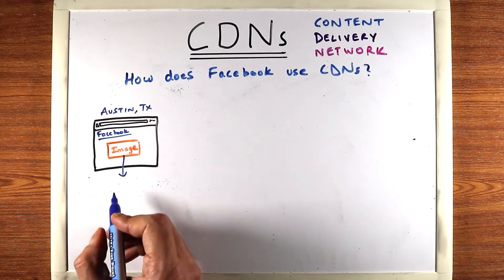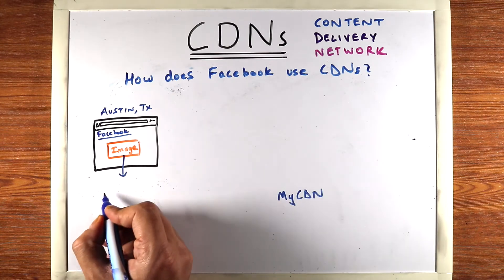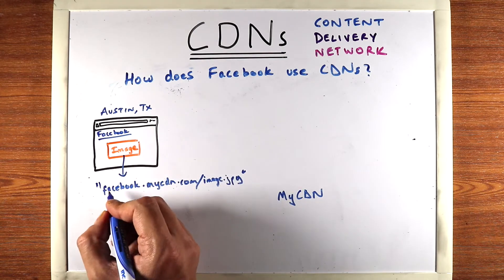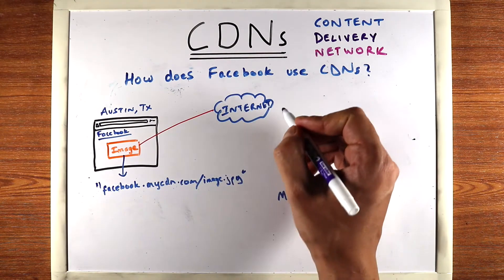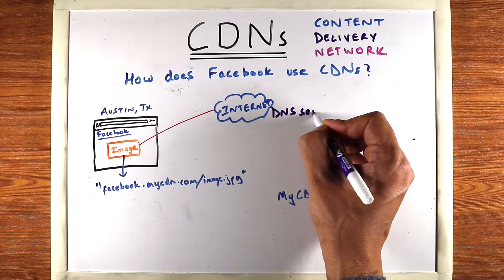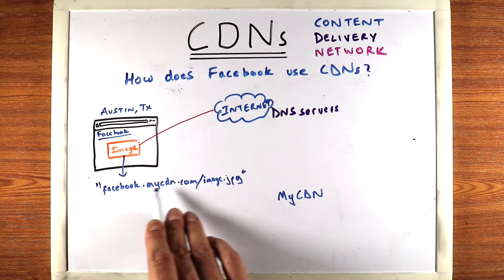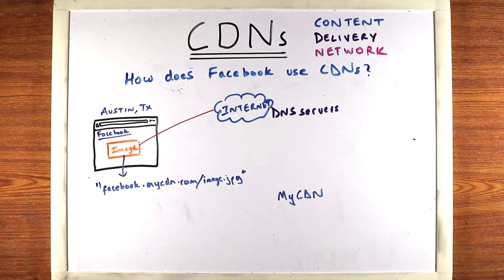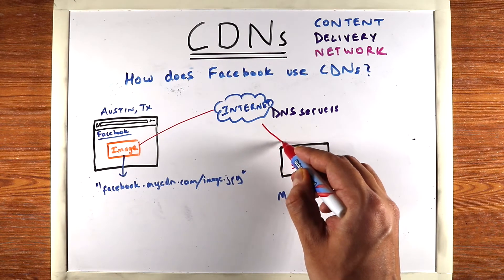Instead, the link will be from the CDN company. Let's say our fake CDN company is MyCDN, so the link will be something like facebook.mycdn.com slash image. This will be the link that the browser gets. The browser will try to hit the internet with this link, and the internet consists of DNS servers whose job is to locate the server you're trying to hit — to turn this URL into an IP address. The DNS servers will direct this to a local server of MyCDN. Let's say MyCDN has a server in Austin; the DNS server will direct this request to that CDN server.